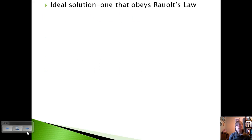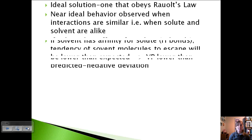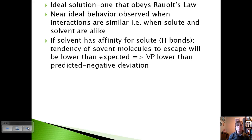But let's talk about some more ideal things. An ideal solution is one that obeys Raoult's law. And we can have some slight deviations from this. So we can have what's called near-ideal behavior when interactions are similar, meaning the solute and the solvent are similar in chemical structure or somehow alike. So we kind of think back to the like-dissolves-like stuff that we talked about.